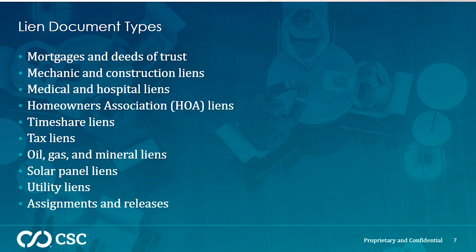There are multiple lien document types that companies can record. Just to name a few: mortgages and deeds of trust, mechanics and construction liens, medical liens, HOA liens, timeshare liens, tax liens, ONG and mineral liens, solar panel liens, utility liens, and assignments and releases. This paints a picture of the wide variety of liens that submitters are able to eRecord using our system.